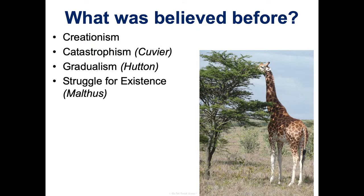Thomas Malthus came up with the first theory closest to what Darwin came up with — a struggle for existence. He saw that organisms could have far more offspring than they actually do; there's just not enough resources, so there's this struggle for existence that creates competition based on resource availability, which is a key tenet of natural selection. Charles Lyell proposed uniformitarianism, and importantly was the first to say Earth is not just thousands of years old — it's millions of years old.